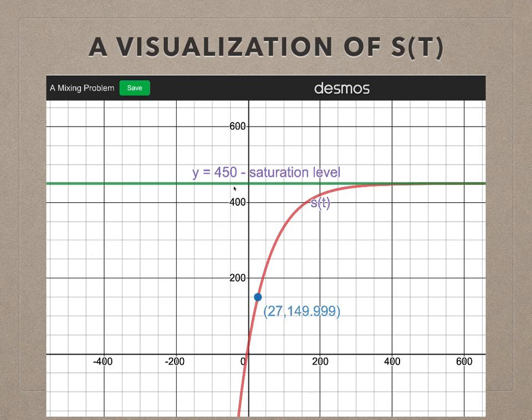As you can see, this horizontal y equals 450 grams is a saturation level. What does it mean? It means that as time goes by, the amount of salt will be reaching this level. It tries to reach a very close point to 450, but it would never reach this level. So that's why it's called the saturation level. Again, this is the visualization of the solution that we found to the mixing problem.